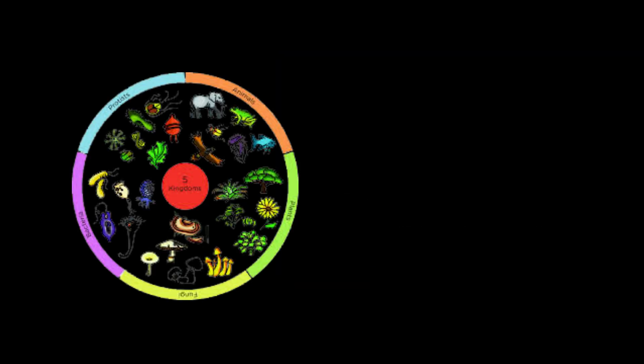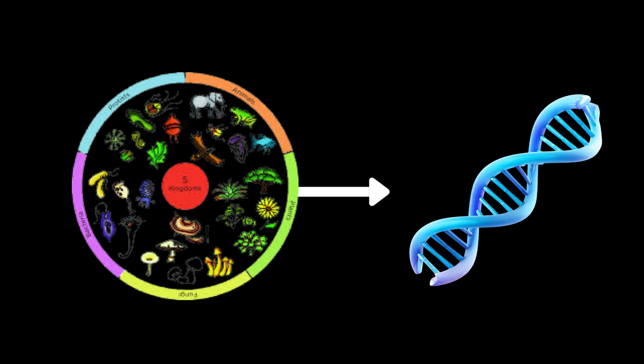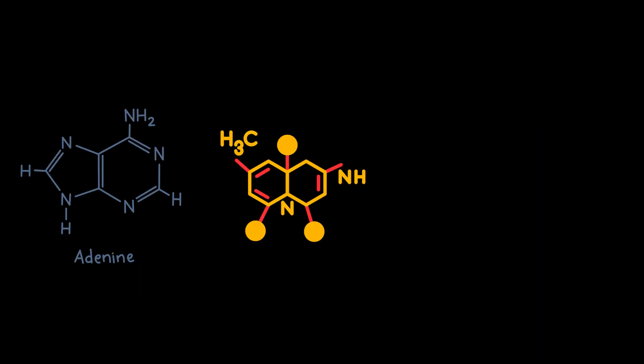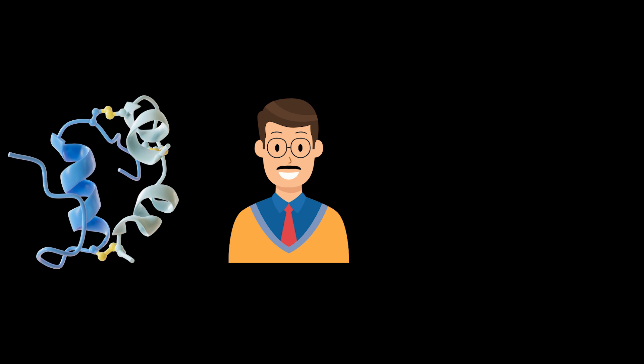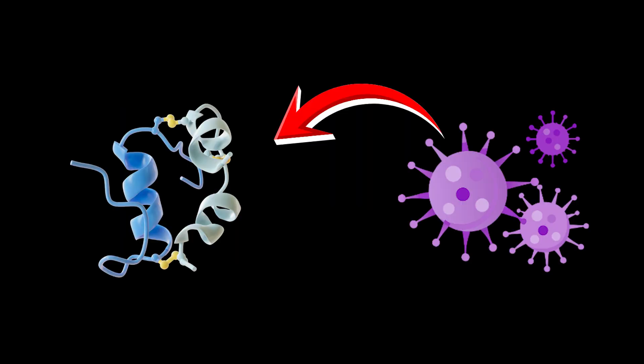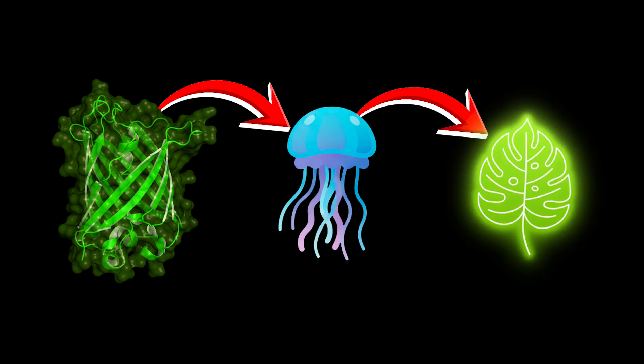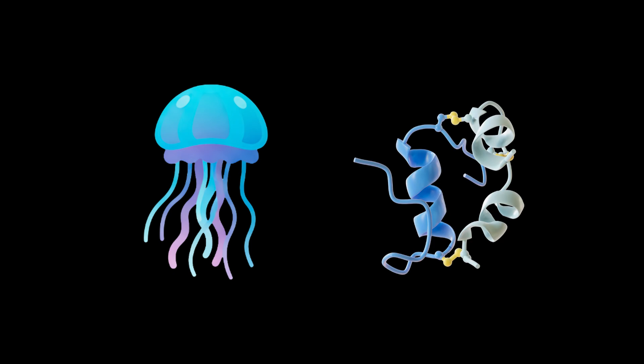Genetics also shows how connected all life is. Every living organism uses DNA. Every living thing uses the same four letters. A, T, C, G. And the genetic code is universal. The gene for insulin in humans can be inserted into bacteria. And bacteria can produce insulin. A fluorescent gene from jellyfish can be added to plants to make them glow. Life is modular. Different species use the same biological language.